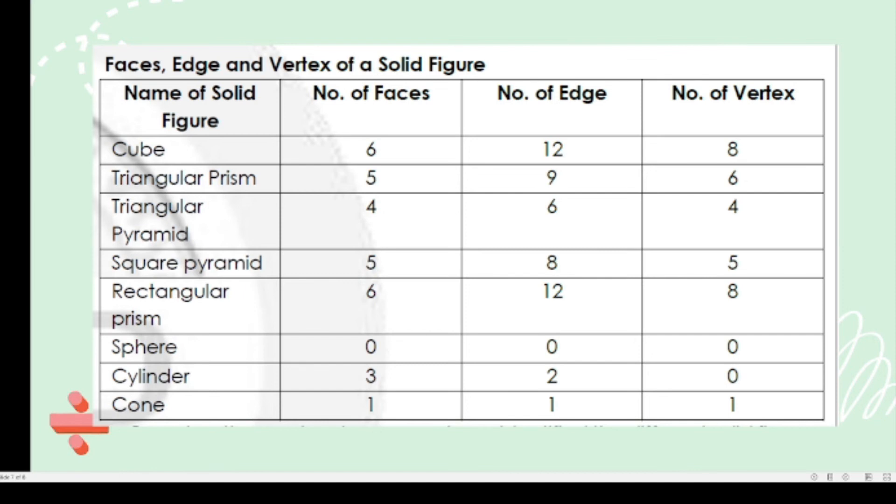Next, triangular prism has 5 faces, 9 edges, and 6 vertices. Triangular pyramid has 4 faces, 6 edges, and 4 vertices. Square pyramid has 5 faces, 8 edges, and 5 vertices. Rectangular prism has 6 faces, 12 edges, and 8 vertices.